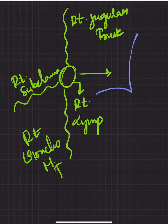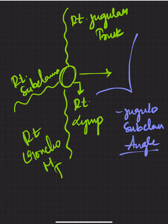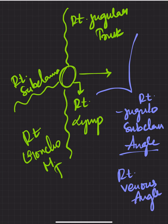The right venous angle is the jugular-subclavian angle. It is the angle formed by the right jugular vein and right subclavian vein, and is called the right jugular subclavian angle or simply the right venous angle. So the right lymphatic duct drains the right head, neck, thorax, and right upper limb into this angle.